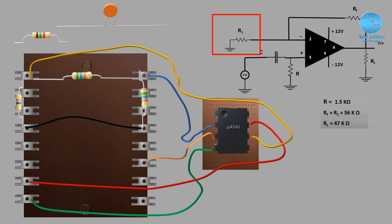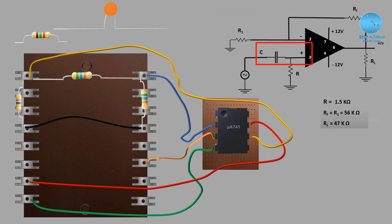R1 is now connected. The next connection is at the third pin, the non-inverting input. For the high pass filter, we connect the capacitor at this pin, then connect the function generator to supply input voltage through the capacitor.